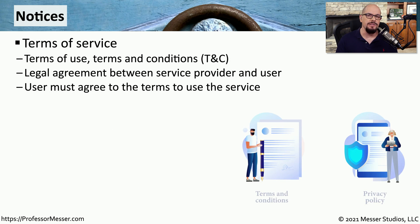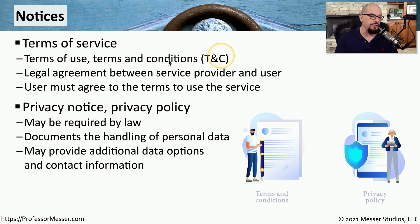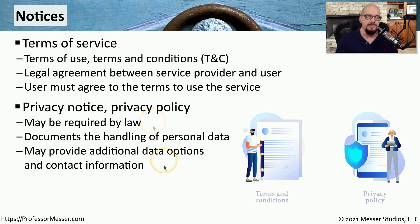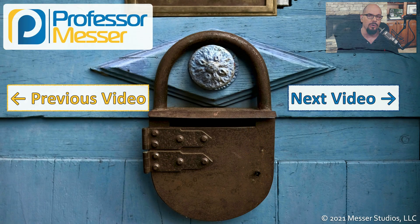There are a number of different places that you can get information on how an organization might be handling data. One of these is through the terms of service. You may hear this referred to as terms of use, or terms and conditions, or TNCs. This is a legal agreement, and a user commonly has to agree to these terms and conditions prior to using a service. There might also be a separate set of documentation called a privacy notice or privacy policy, and this may be required depending on where this organization happens to do business. This documents how the organization is going to manage the data that you provide to them, and it also gives you options on what you can do to help protect your data and who you can contact in that organization for more information.